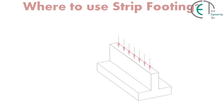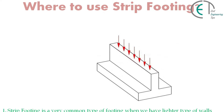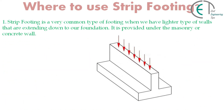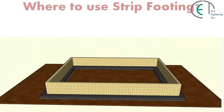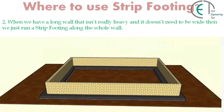Now let's discuss where we should use strip footing. Strip footing is a very common type of footing when we have lighter types of walls extending down to our foundation. It is provided under machinery or concrete walls. When we have a long wall that isn't really heavy and doesn't need to be wide, we just run a strip footing along the whole wall.